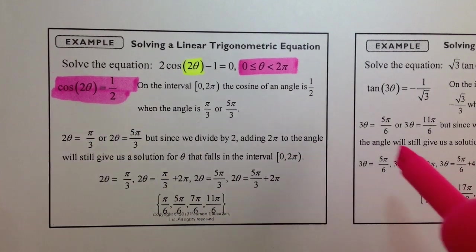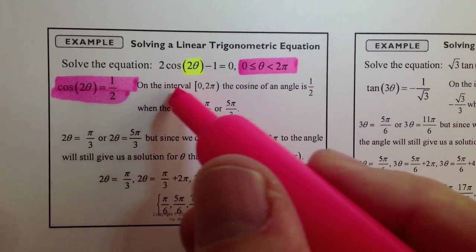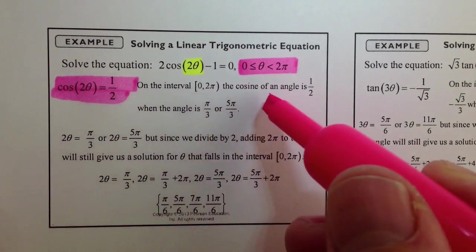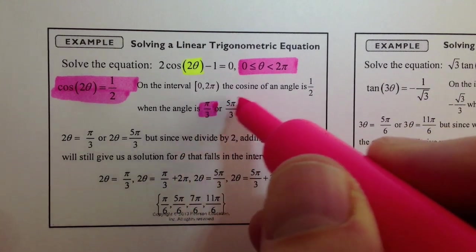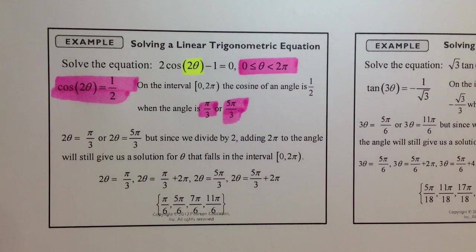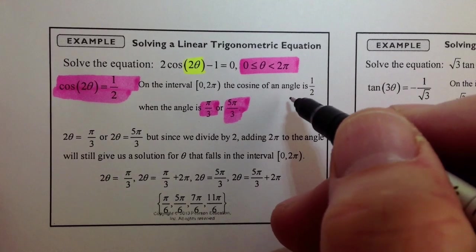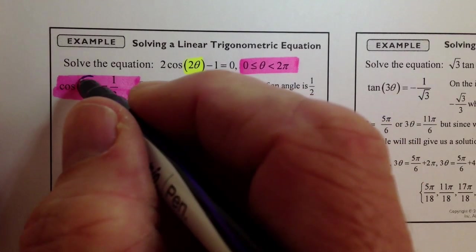And we know that the cosine, so here's the deal. On the interval 0 to 2 pi, the cosine of an angle is 1 half when the angle is pi over 3 or 5 pi over 3. So, again, if you look back at the unit circle,